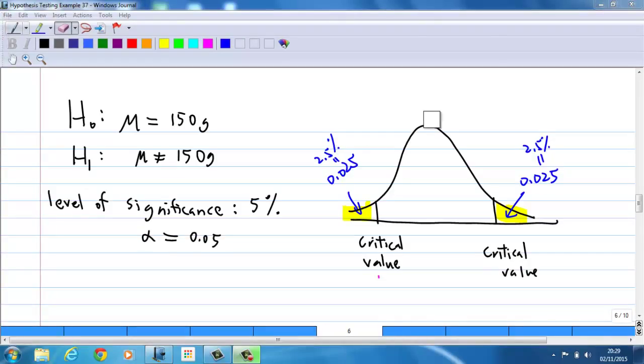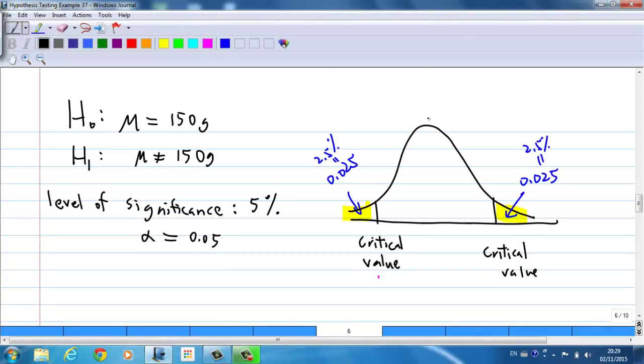Using the standard normal table, where the mean is 0, this critical value from the table is 1.96 and negative 1.96. How do we get this value? We get it from a table. This table is in the formula card, and you can download this table from Blackboard.